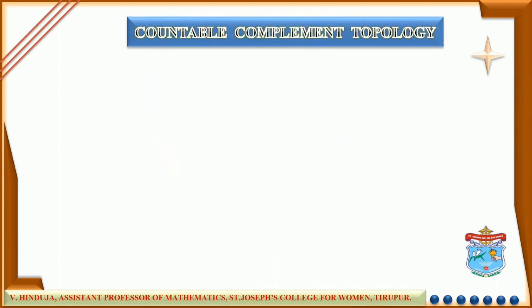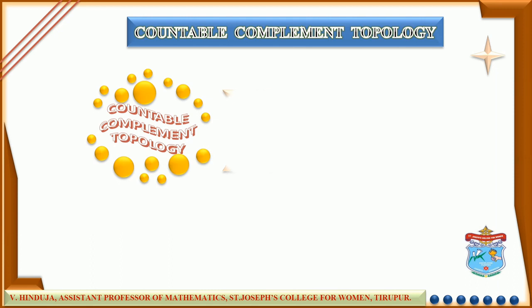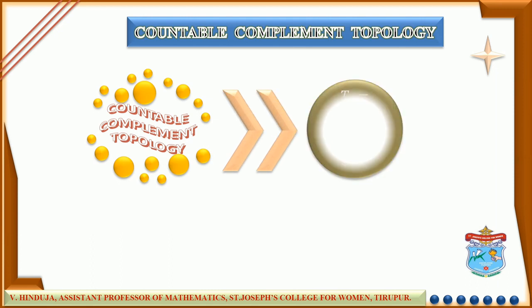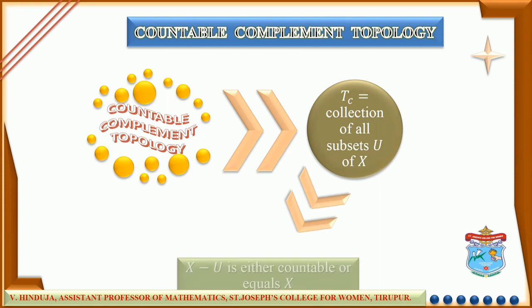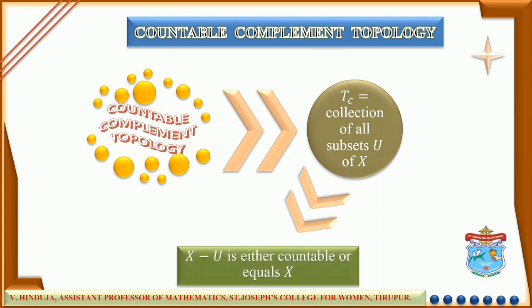Countable complement topology. This is a collection, say Tc, of all subsets U of X, where the subset U should satisfy the following condition: X minus U is either countable or it equals X.